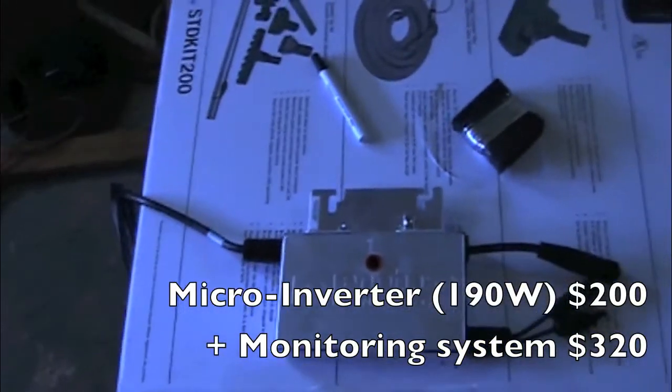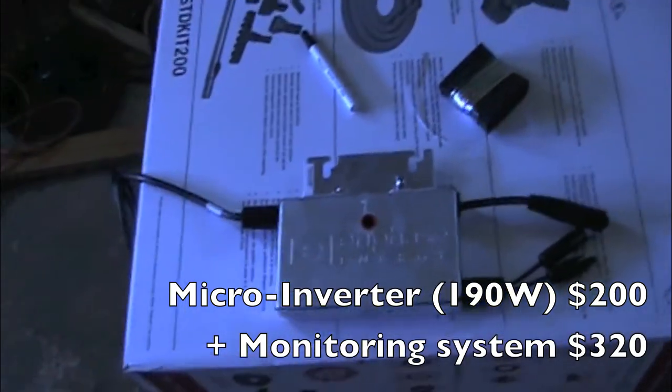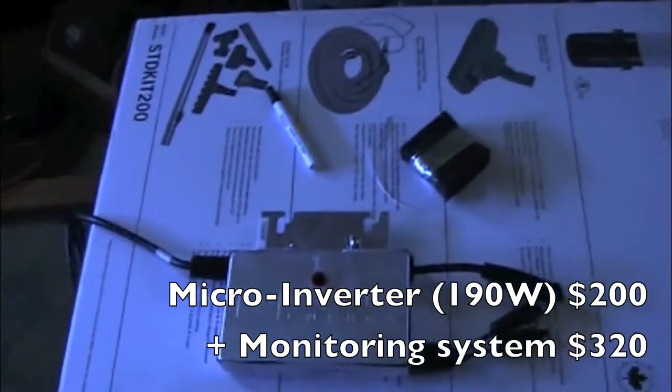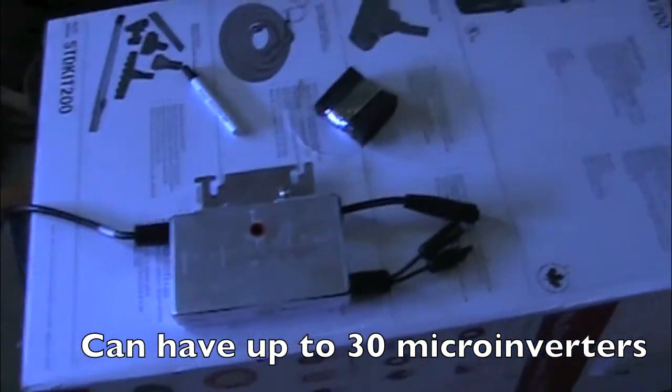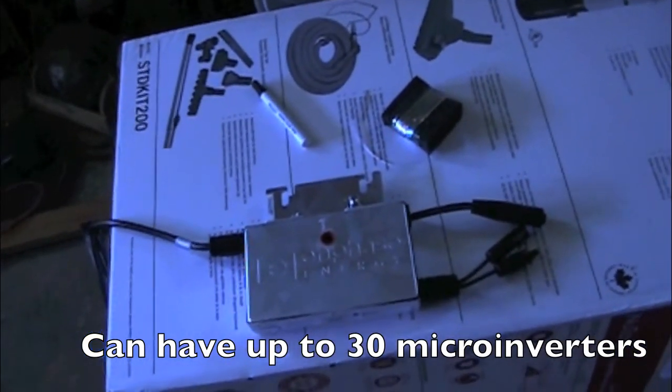Enphase micro inverter. This one's rated at 190 watts. They have ones that go up to 210 watts. So you can string a panel of any size, shape, description. It doesn't have to be matching. You can plug it into this thing and max it out.